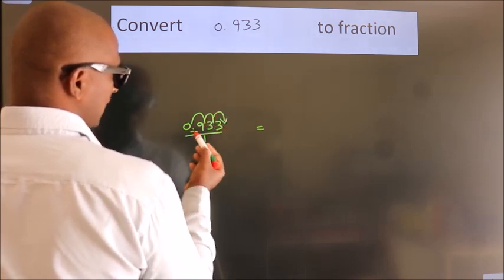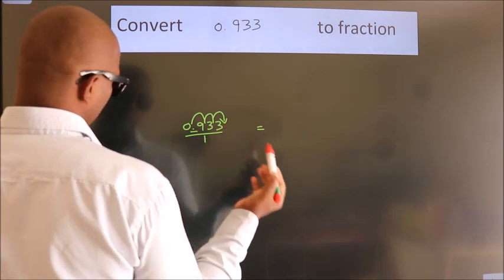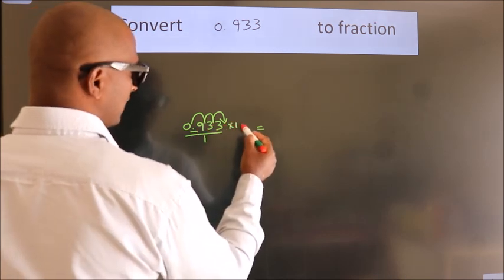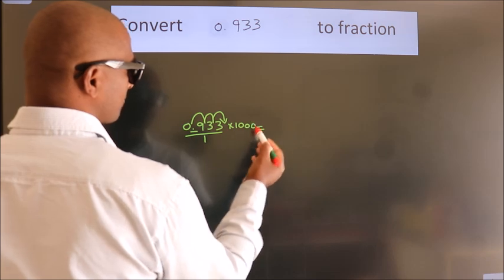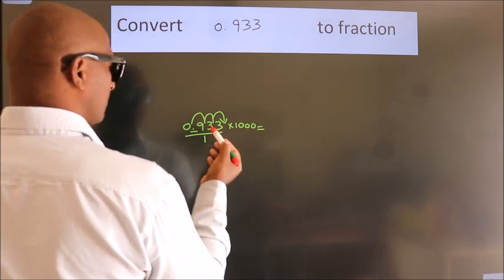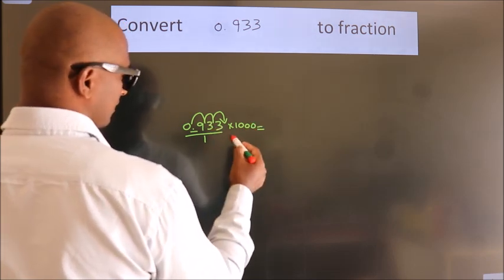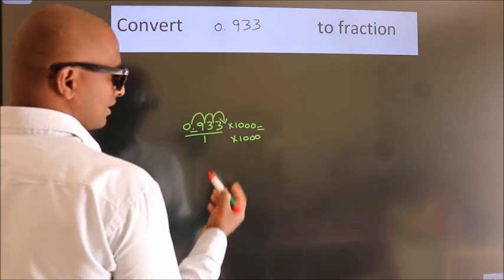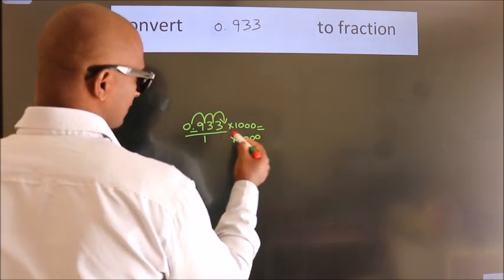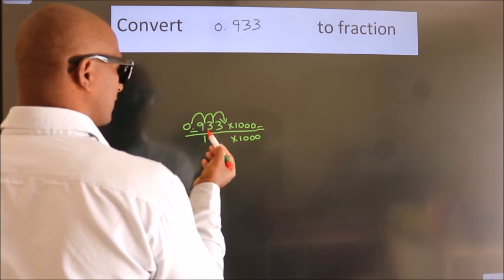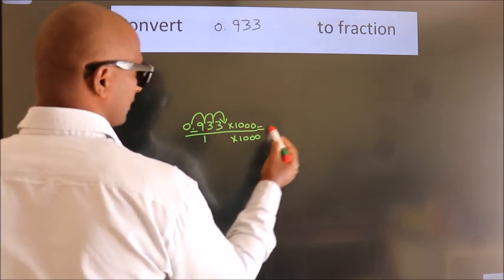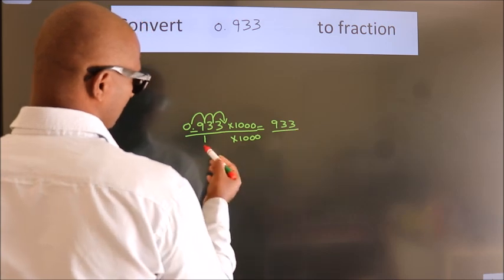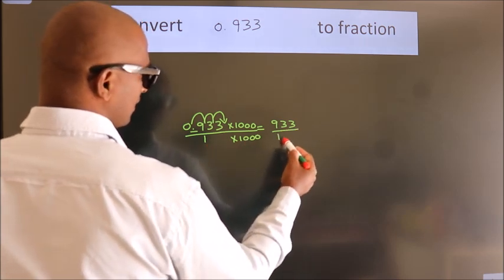To move this decimal after 3 numbers, we have to multiply it with 1000. Whatever number you are multiplying in the numerator, in the denominator also do the same. So, 0.933 into 1000 equals 933, and 1 into 1000 equals 1000.